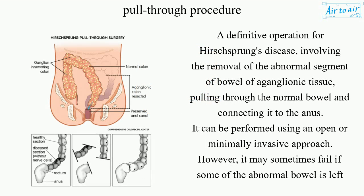A definitive operation for Hirschsprung's disease, involving the removal of the abnormal segment of bowel of aganglionic tissue, pulling through the normal bowel and connecting it to the anus. It can be performed using an open or minimally invasive approach. However, it may sometimes fail if some of the abnormal bowel is left behind.